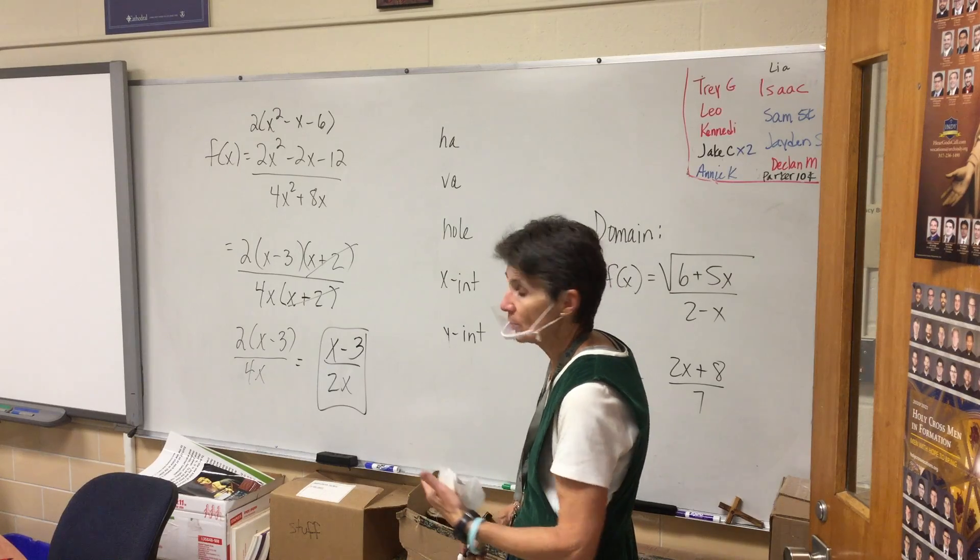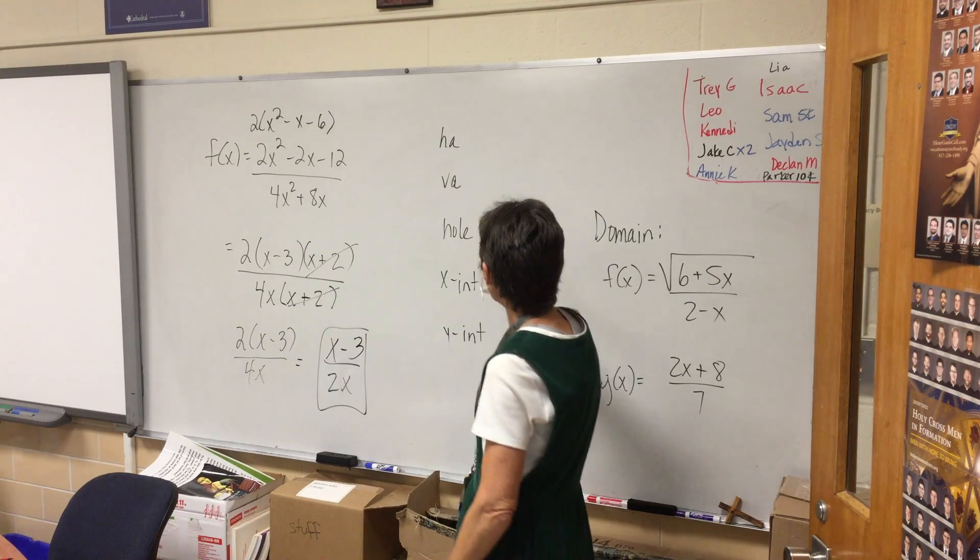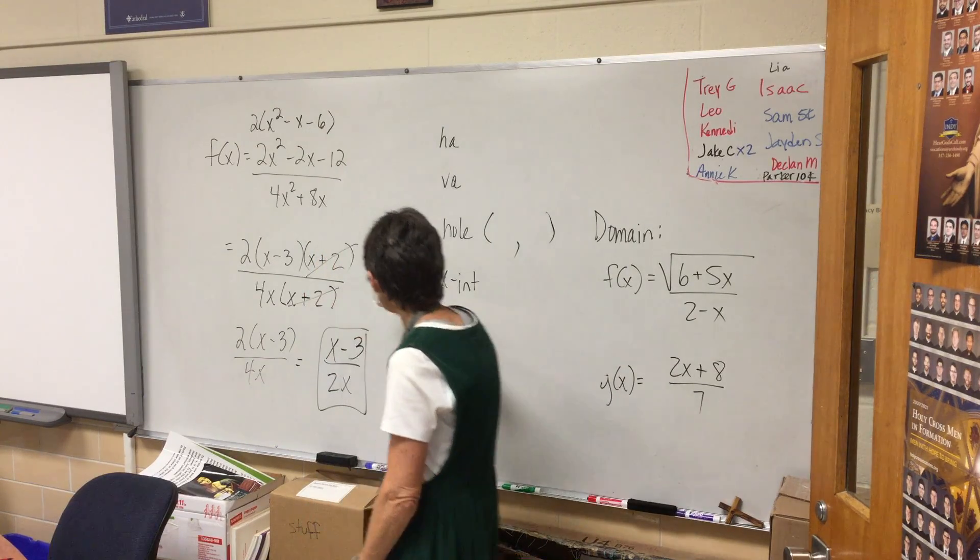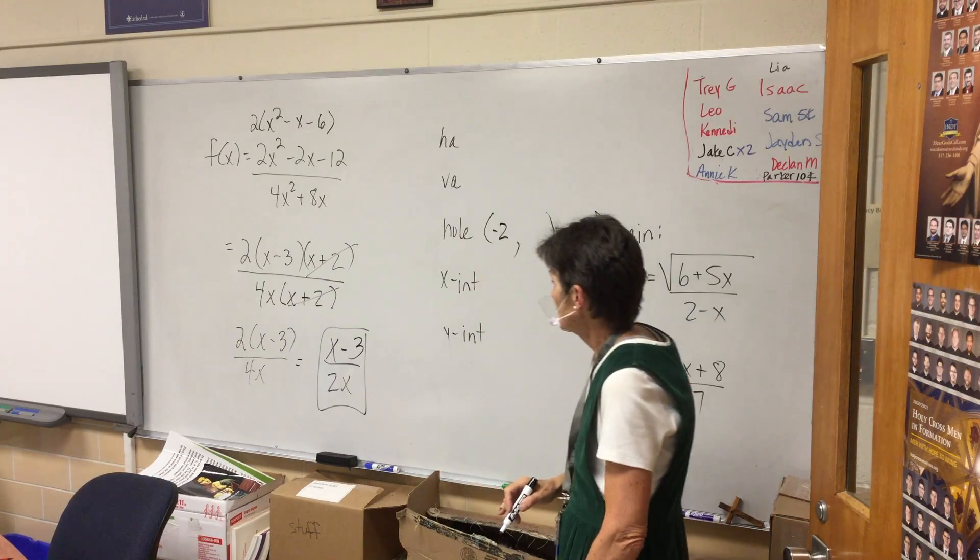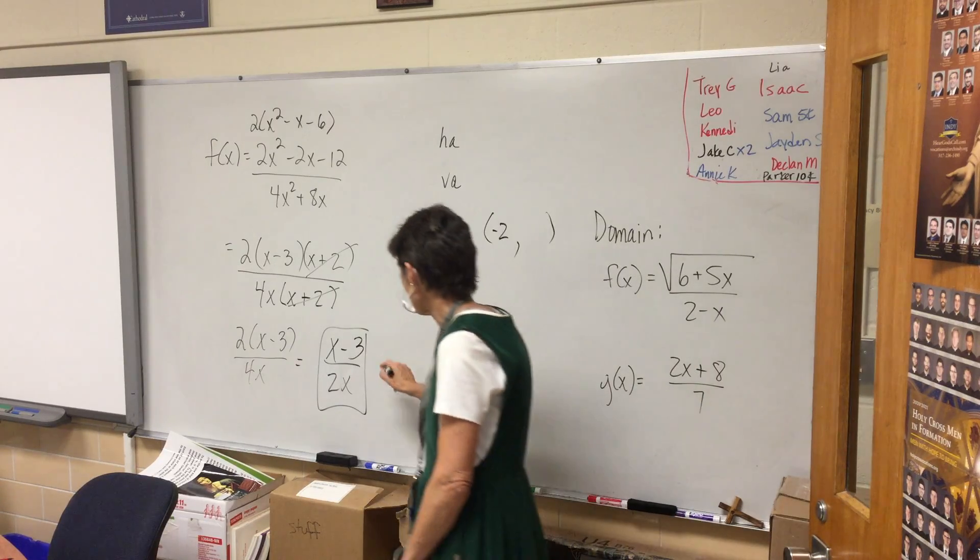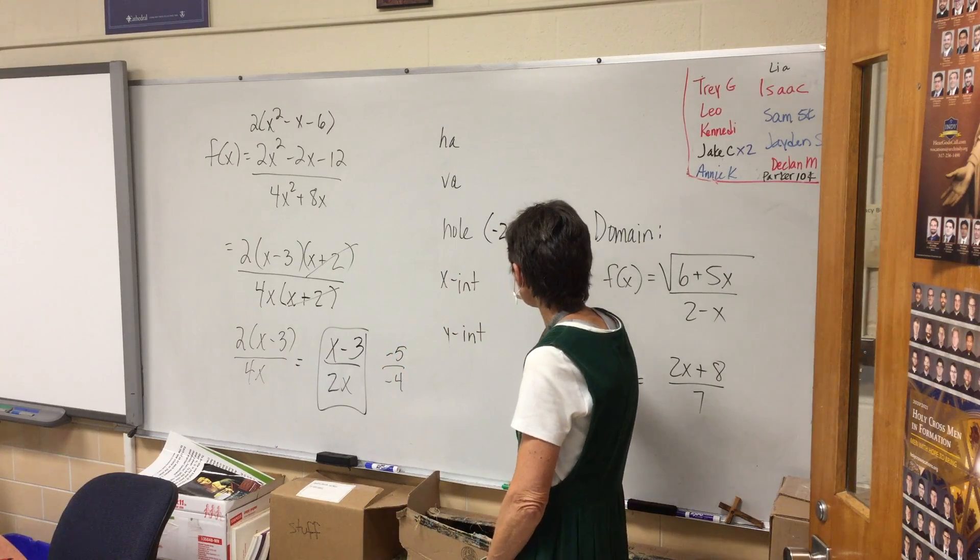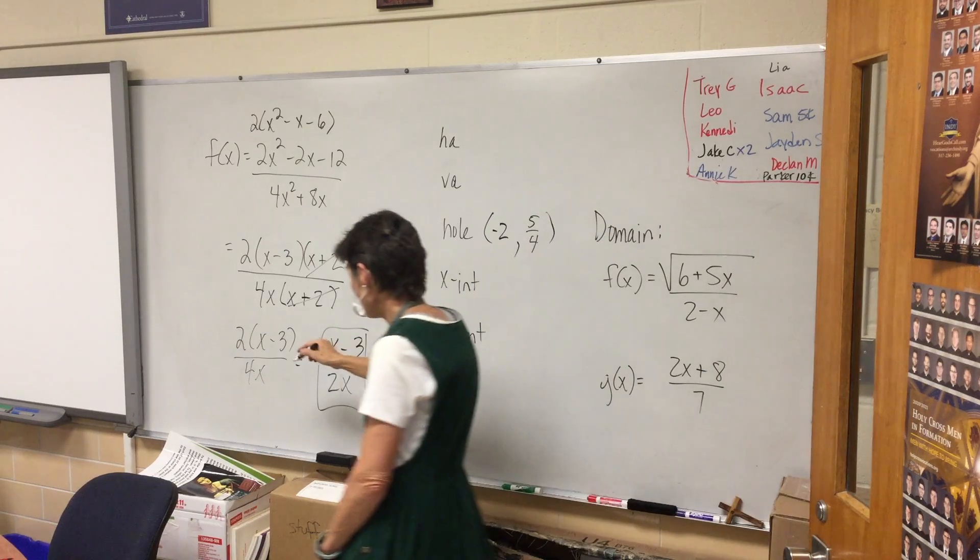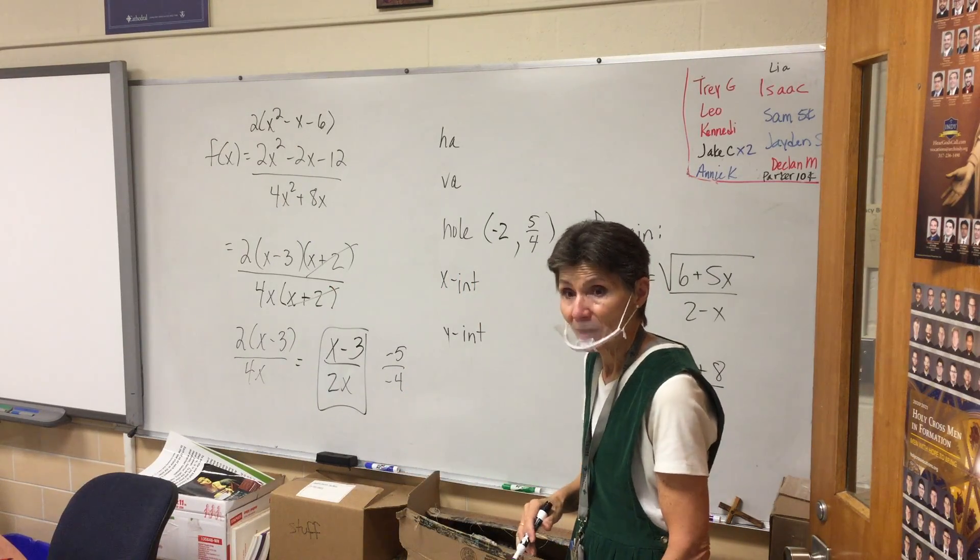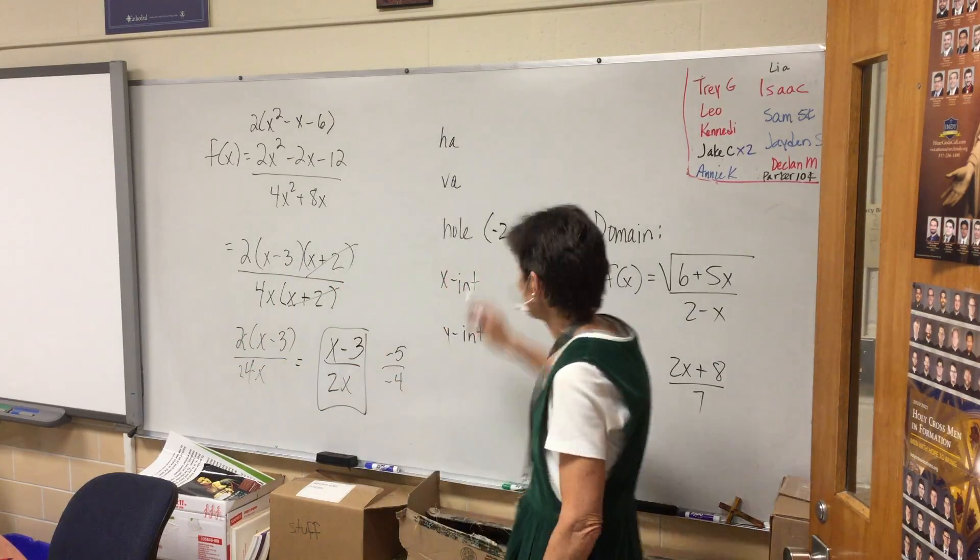That would be x minus 3 over 2x in reduced form. Now if you don't cancel out the two and the four, it isn't going to matter. The answers are going to be the same. Where's that hole going to be? It's going to be at the x value that I cancelled out. What x did I cancel out? Negative two. Then I'll find my y by plugging negative two into this. That would be negative 5 over negative 4, or 5 fourths.